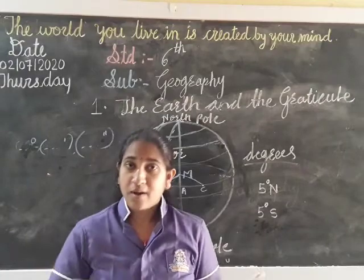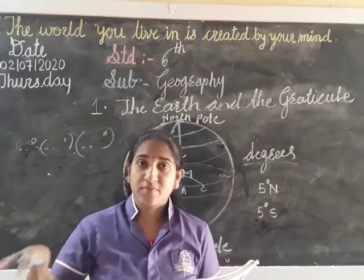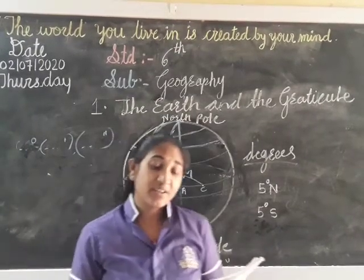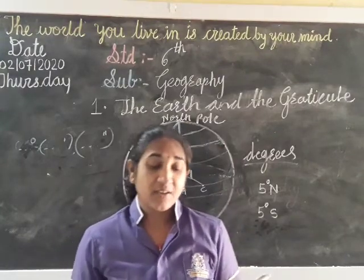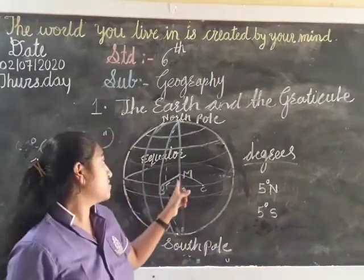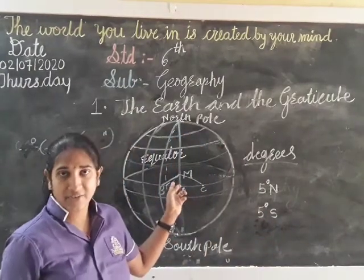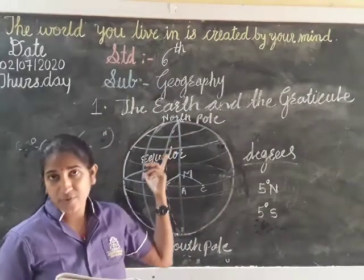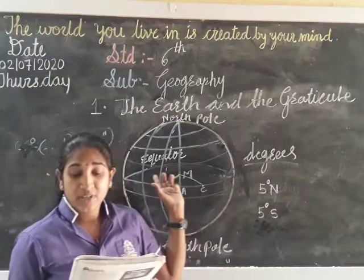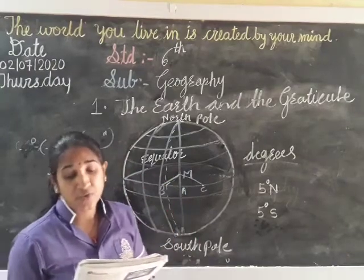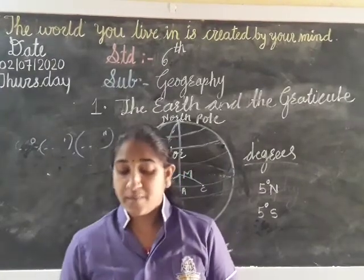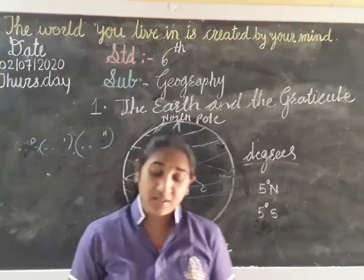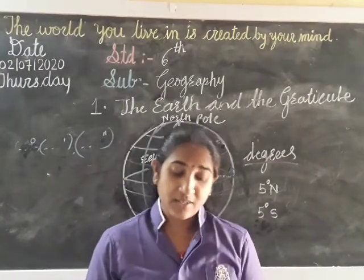The circle is 360 degrees and these are the meridians. Zero is the prime meridian, just as the equator is zero, the prime meridian is also zero. There are a total of 180 meridians. Thus, we have 179 meridians in the eastern hemisphere and 179 in the western hemisphere.